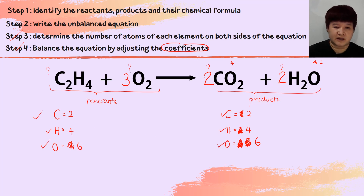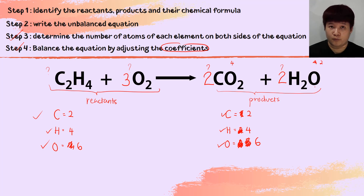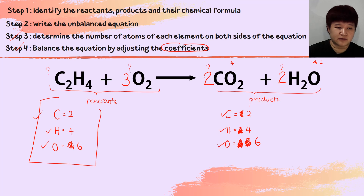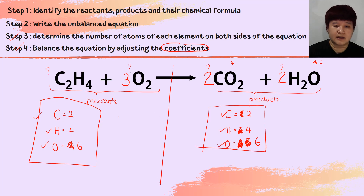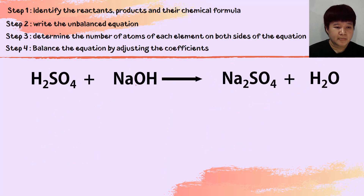The balanced chemical equation is: C₂H₄ + 3O₂ → 2CO₂ + 2H₂O. Remember, the number of atoms written here is the total number of atoms of the reactants and of the products, so make sure you add everything up for the reactant side and for the product side.